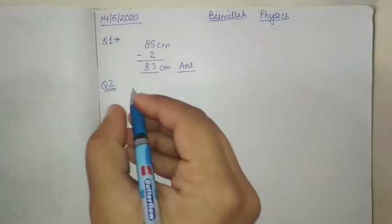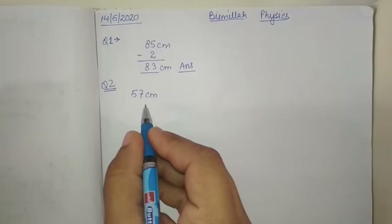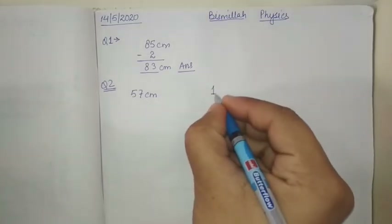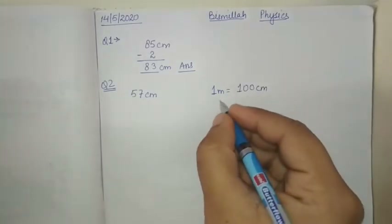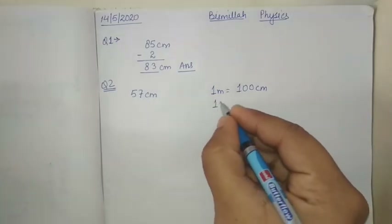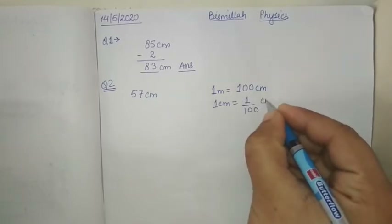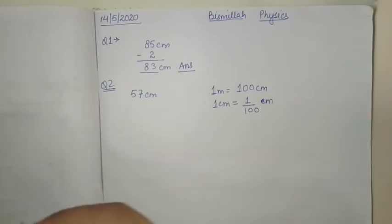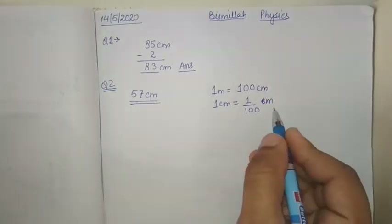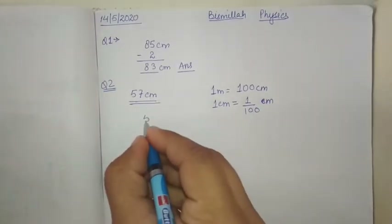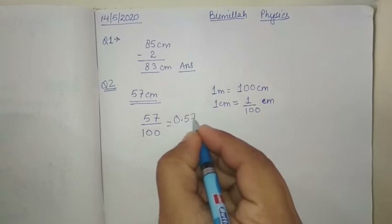The second question: express the following in meters. The given value is 57 centimeter and we have to convert it to meters. We know that 1 meter equals 100 centimeter, so 1 centimeter equals 1/100 meter. To convert centimeter to meter, we divide by 100. Dividing 57 by 100 gives 0.57 meter.